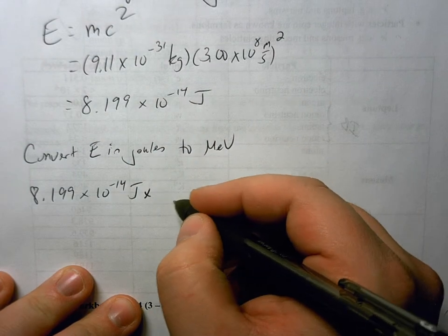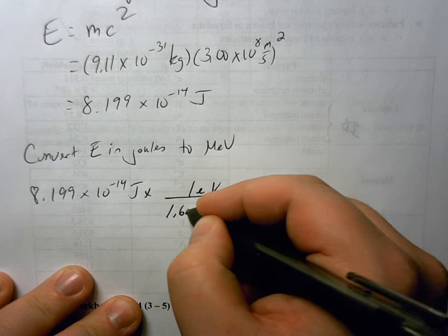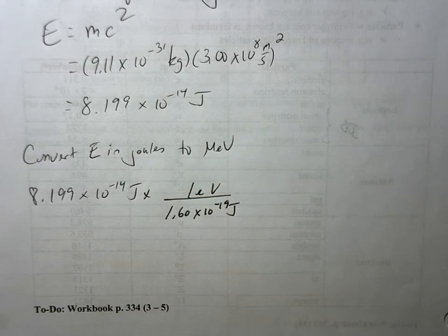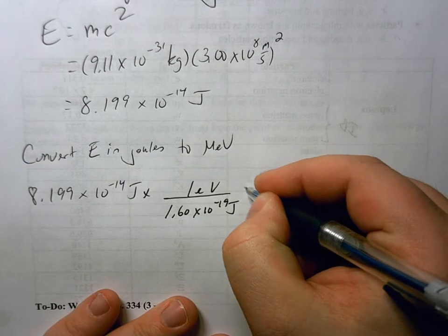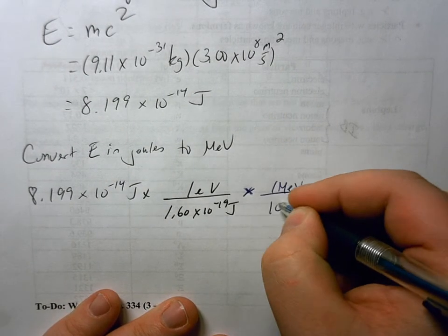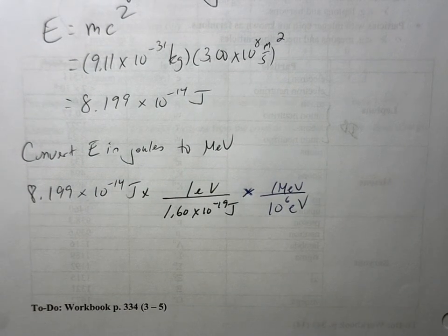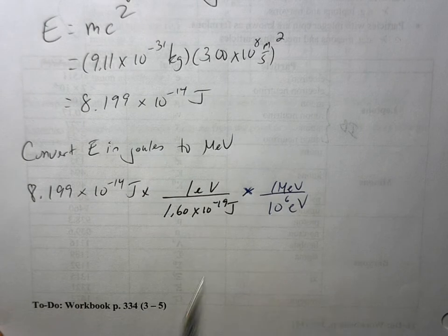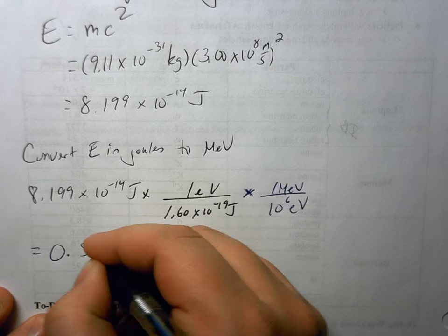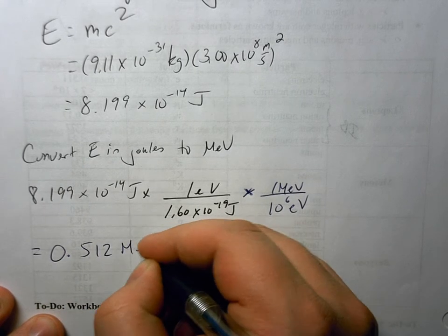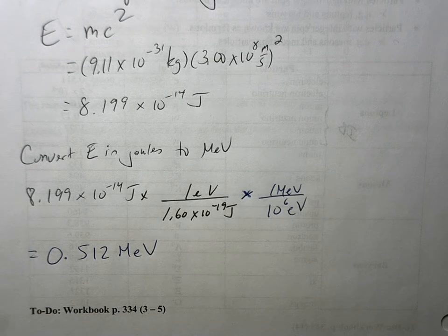So we know in one electron volt, we have 1.60 times 10 to the minus 19 joules. And then we know for every Mega Electron Volt, we're going to have 10 to the 6 EV. So really what we're doing is we're dividing this by 1.6 times 10 to the minus 13. What this is going to do is this is going to give us an energy of 0.512 MeV.